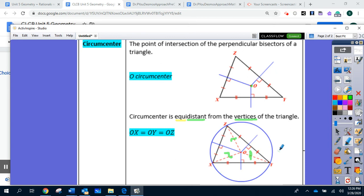That's why it's called circumcenter and the circle is called the circumcircle of the triangle. So the main property is the distances from the circumcenter to the vertex are equal.